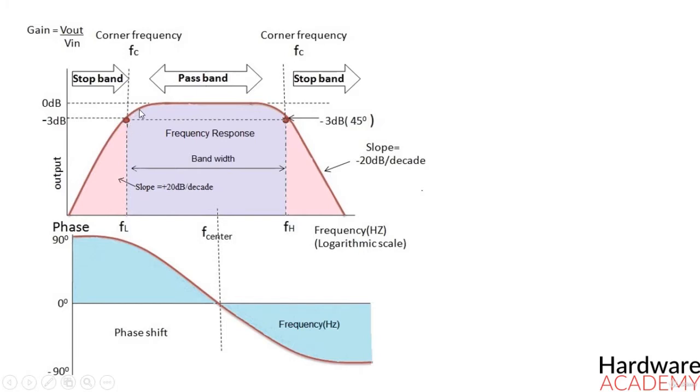After the lower cutoff frequency, the output will increase with the increase of frequency with a rate of minus 20 decibel per decade and attains maximum gain, and this gain is constant until it reaches the higher cutoff frequency.